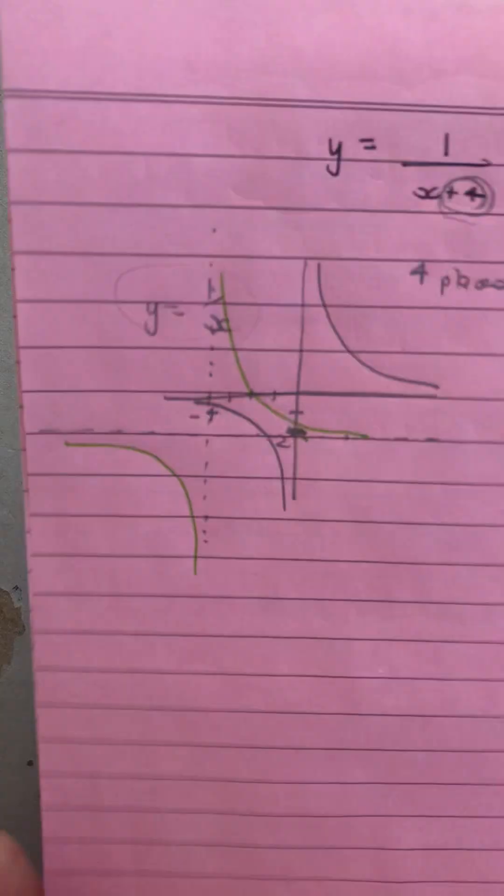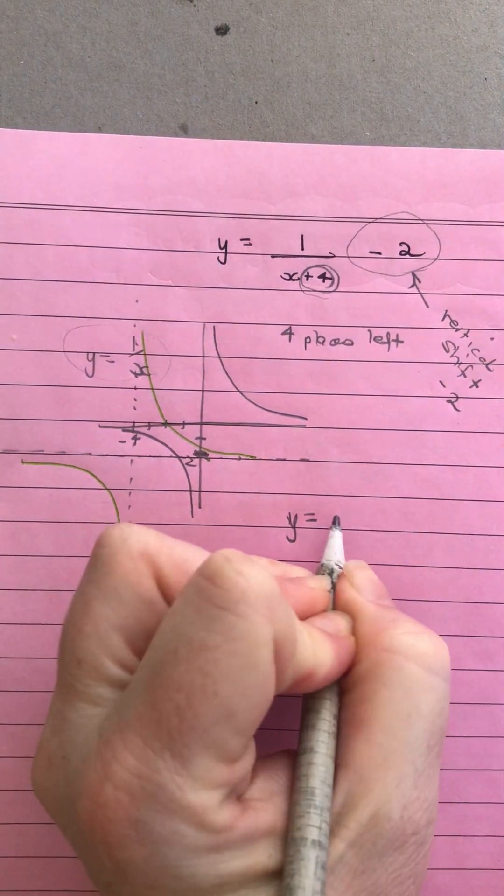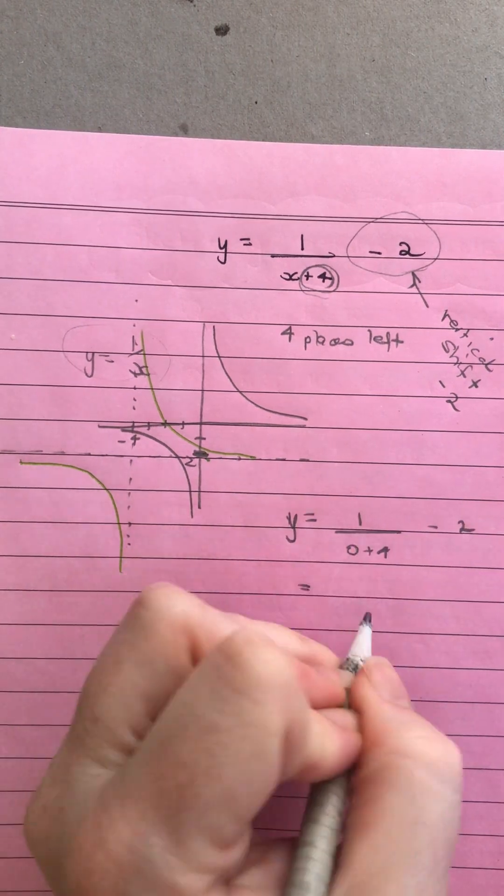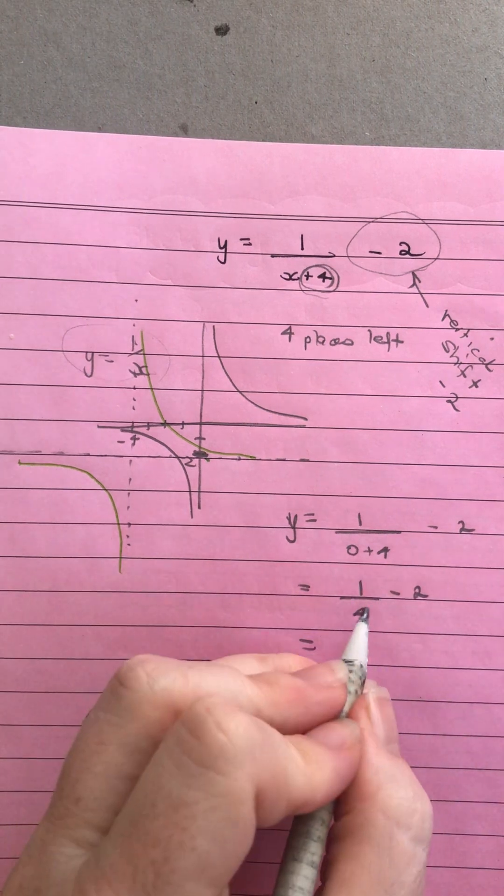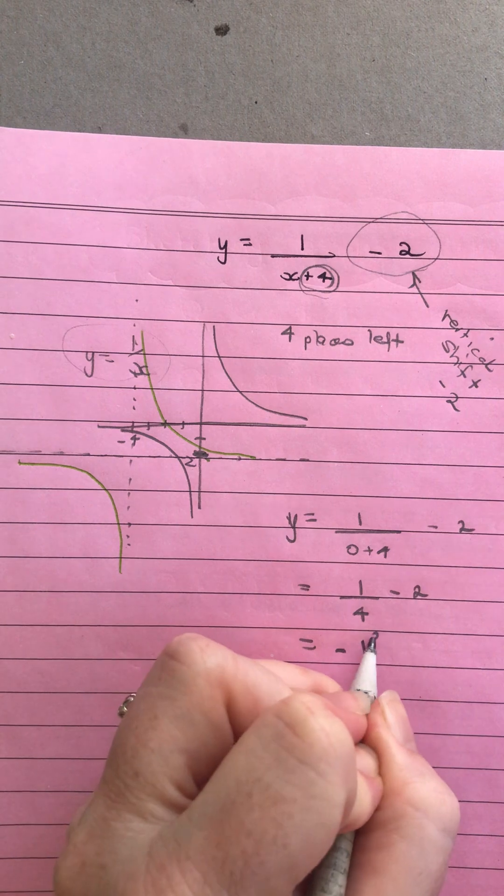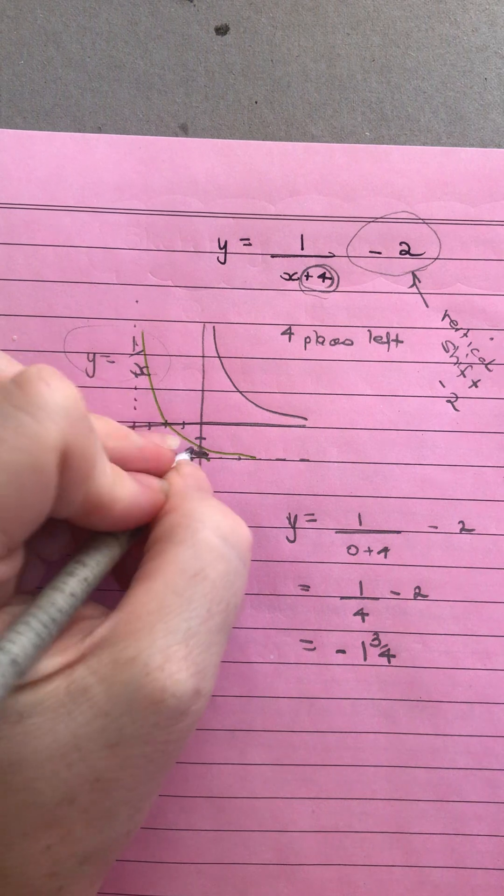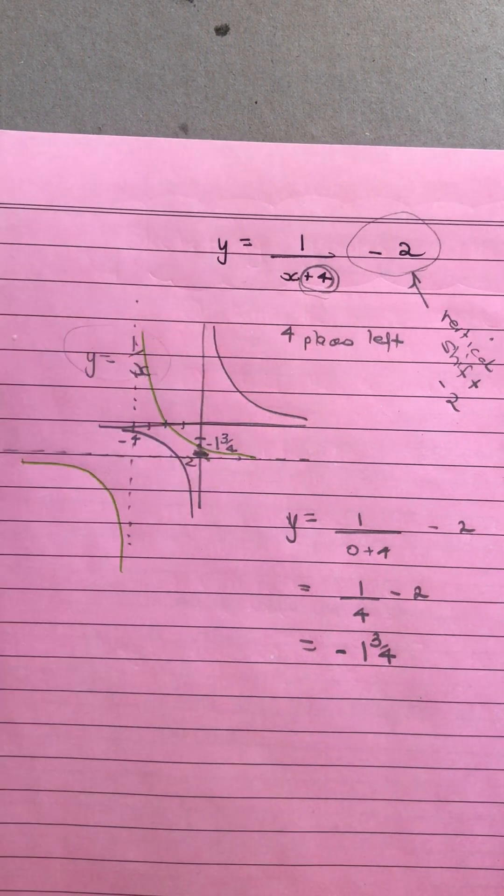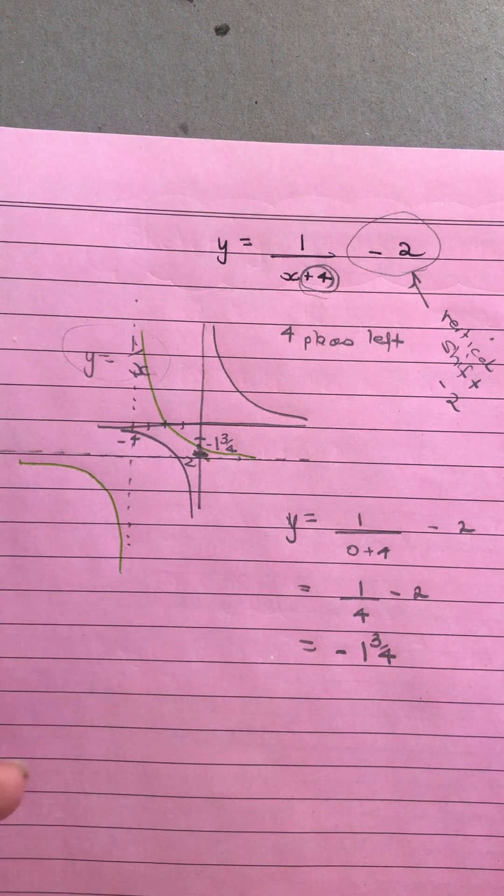Obviously now we can see we do have two intercepts there. We can go back in and then solve for those. So when our x is equal to zero, our y intercept is going to be $\frac{1}{0+4} - 2$. So we've got one on four, take away two, so a quarter take away two is going to be negative one and three quarters. And when we look at our graph here, we can see that that does look about that point, so we can put negative one and three quarters there.